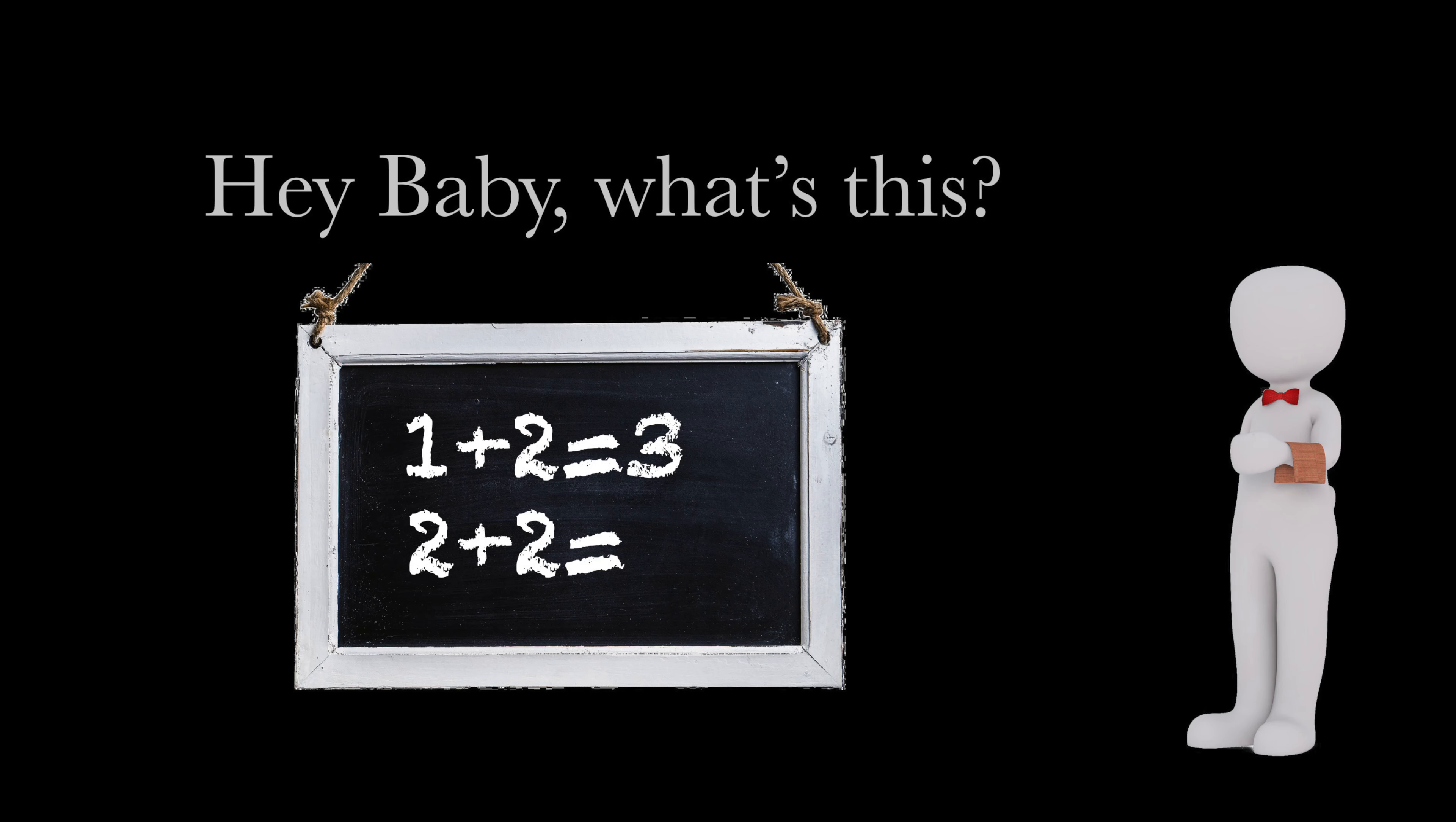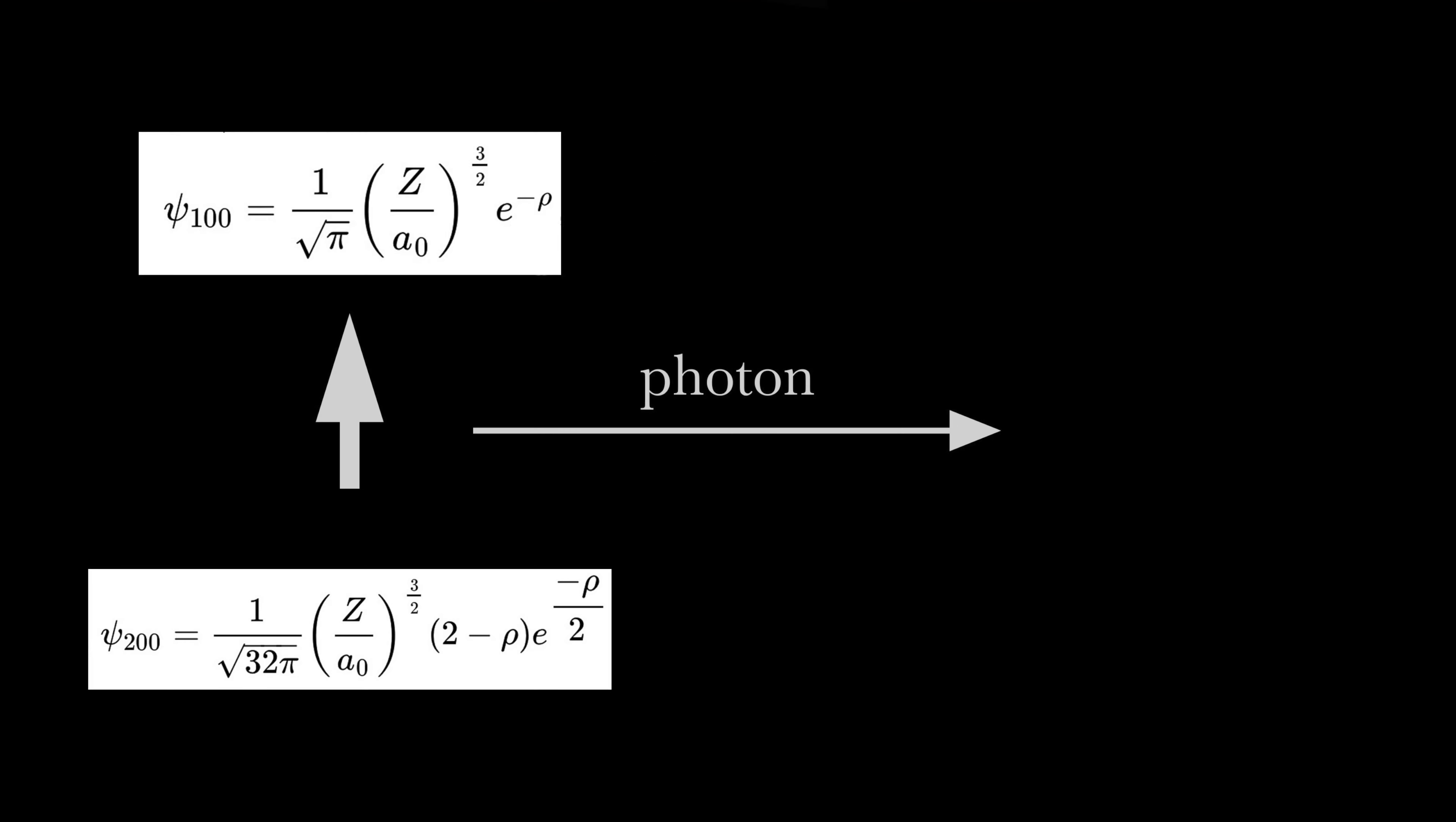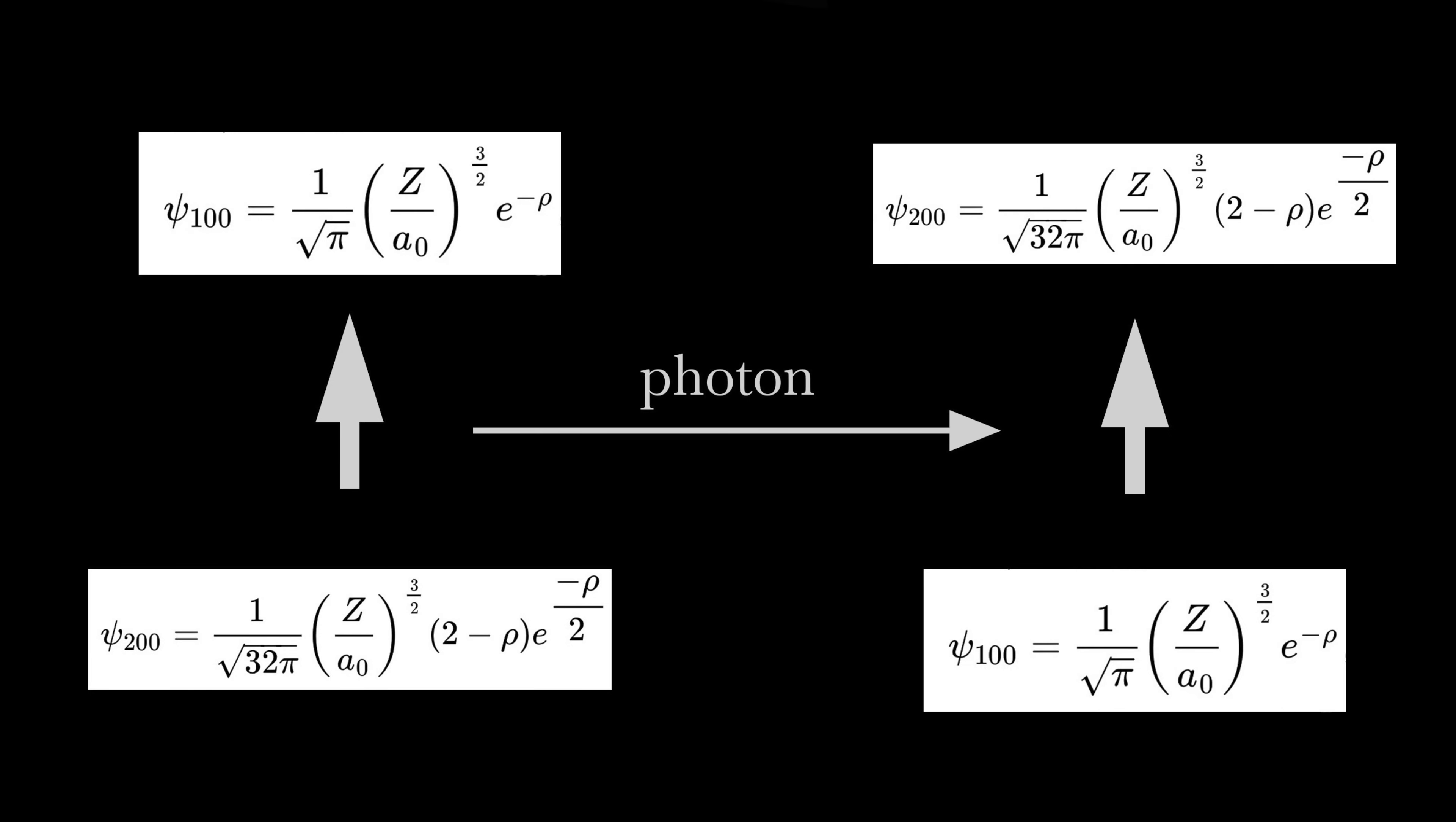When the photon is absorbed, the electron's energy cloud changes from this equation to this, just the reverse of the process that produced it.